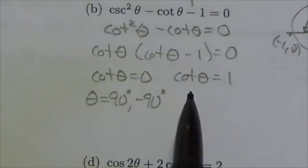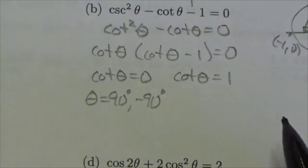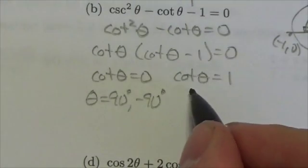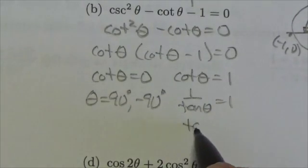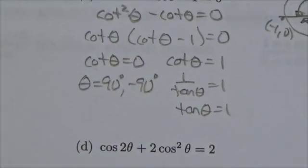Now let's take a look at the second factor that we've got here. Cotangent equals 1. Maybe I don't like working with cotangent. Well, I know cotangent is 1 over tangent. So I'm going to reciprocate both sides here, and I get tangent equals 1.